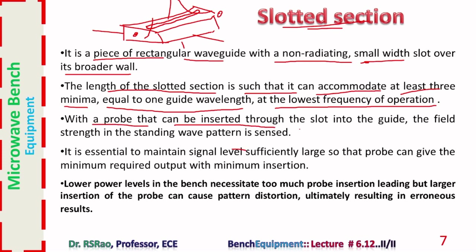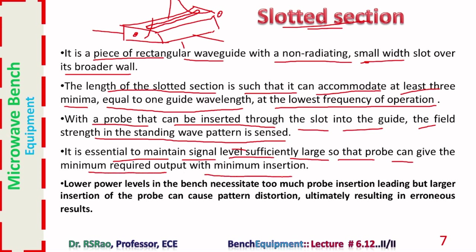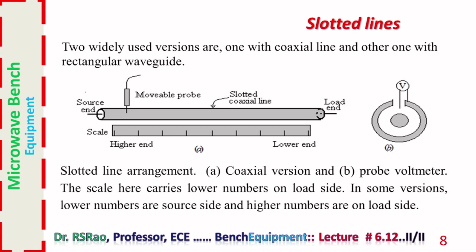With a probe that can be inserted through the slot into the guide, the field strength in the standing wave pattern is sensed. It is essential to maintain signal level sufficiently large so the probe can give the minimum required output with minimum insertion. Lower power levels necessitate too much probe insertion, leading to incorrect results — larger insertion causes pattern distortion, which is a source of erroneous results. Two widely used versions of slotted lines are: one with coaxial line, another with rectangular waveguide.